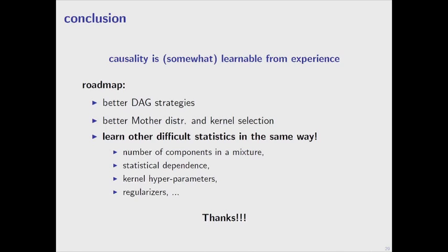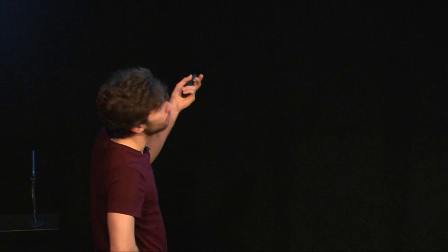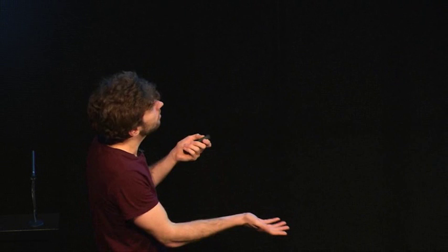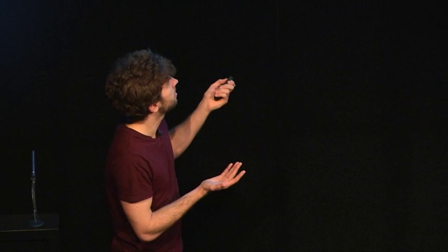In conclusion, causality is somewhat learnable from experience, as David Hume proposed centuries ago. There is still a lot to do — the multi-variable experiments are preliminary, and we need better routines to learn the mother distribution and kernel functions. Future work may apply this classification-learning theory to learn the number of mixture components, dependence statistics, kernel hyperparameters, and regularizers — things learnable directly from data without closed-form solutions.